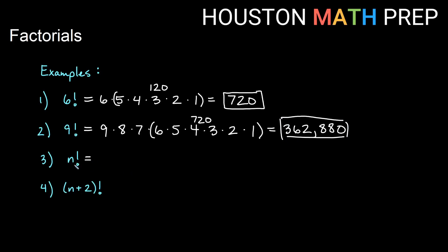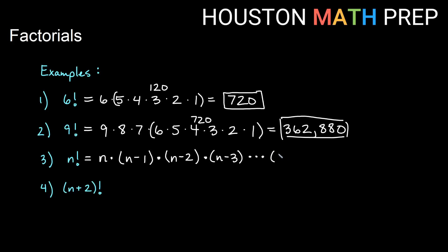For n factorial — that's just saying for some general number — how do we evaluate a factorial? If you look at, say, nine factorial, we start at that number. So for n factorial, I would start at whatever n is. Then I'm just multiplying by one less and then one less than that. So after n in my list would be n minus one, then n minus two, then n minus three, and we'd continue that pattern all the way down to three times two times one.